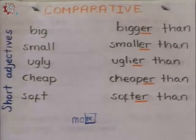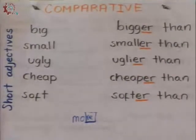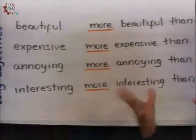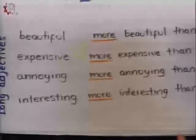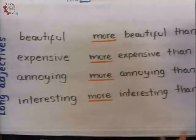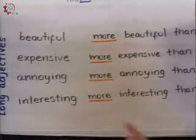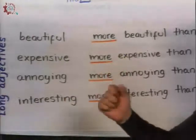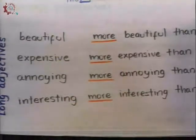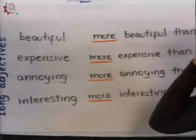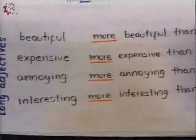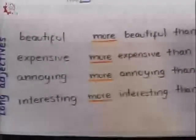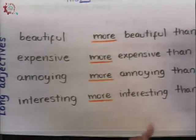Tenemos otra regla con los long adjectives. En su forma simple: beautiful — ¿what's the meaning? Hermoso, that's right. You are beautiful, you're not ugly! Expensive — for example, my ring. Your ring is really expensive — es caro. Annoying — the sound is like annoying, molesto. And interesting — the English class is very interesting.